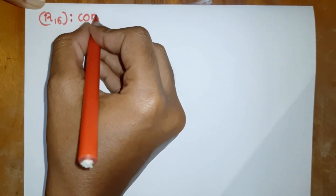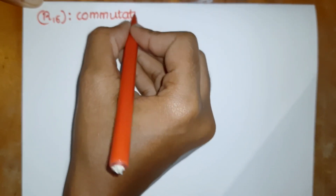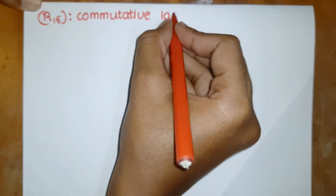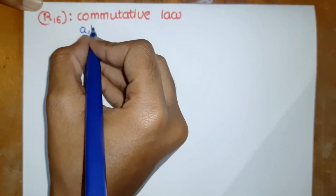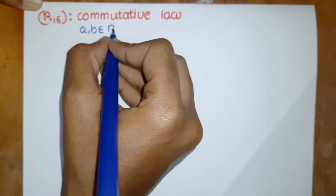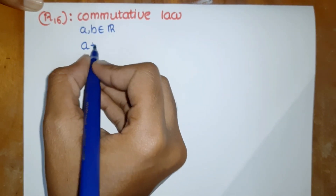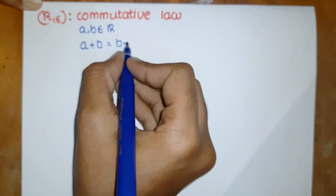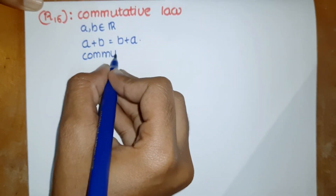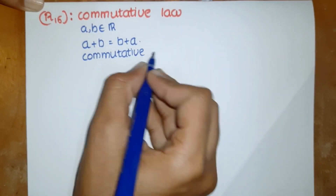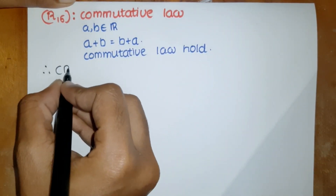Then we move on to the commutative law: a plus b equals b plus a. If these five axioms are satisfied, we call R an abelian group under addition.